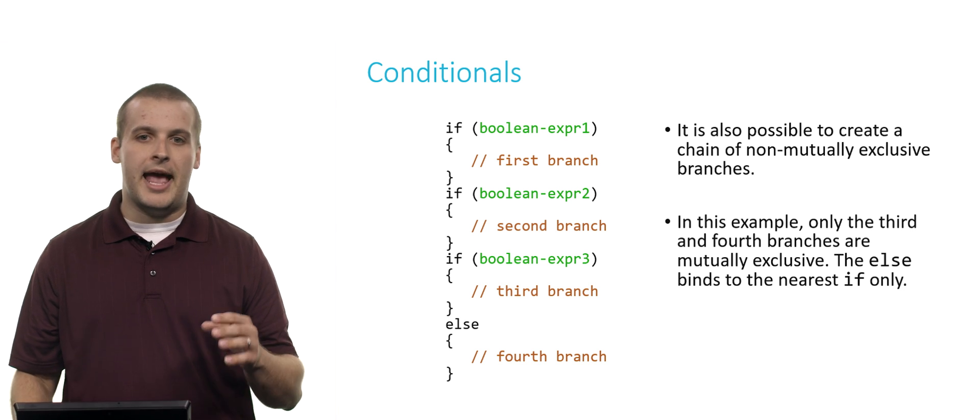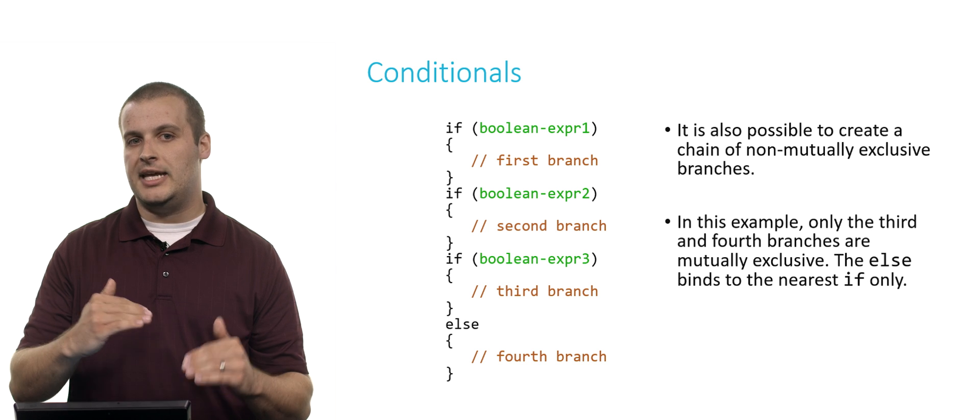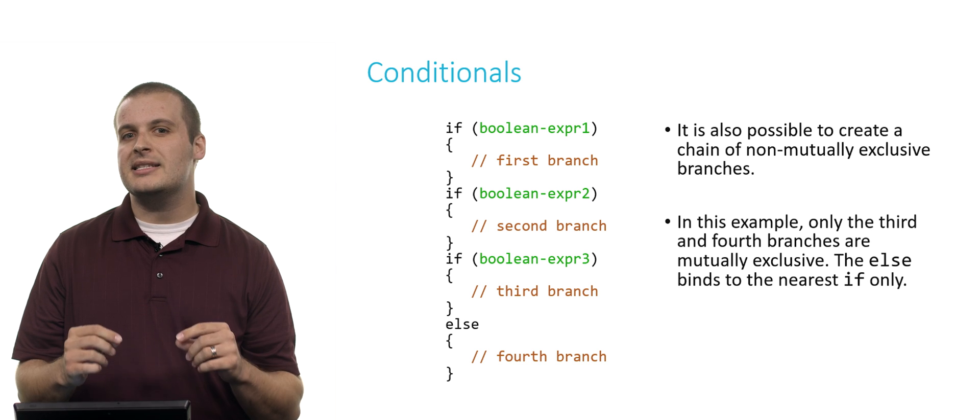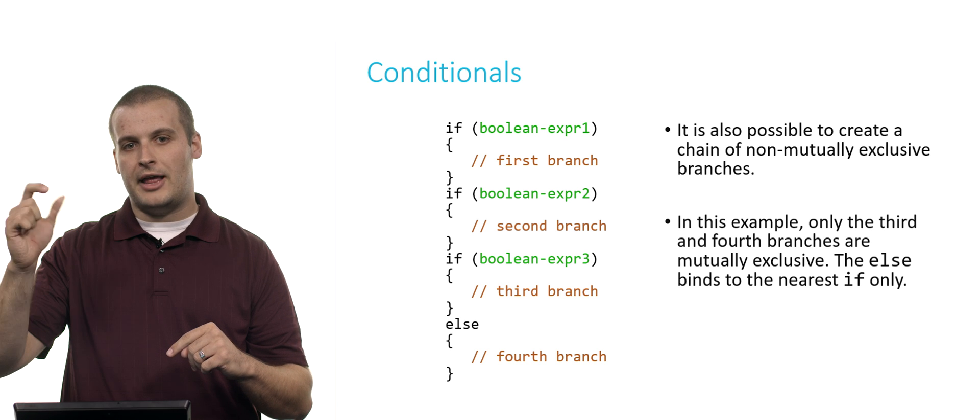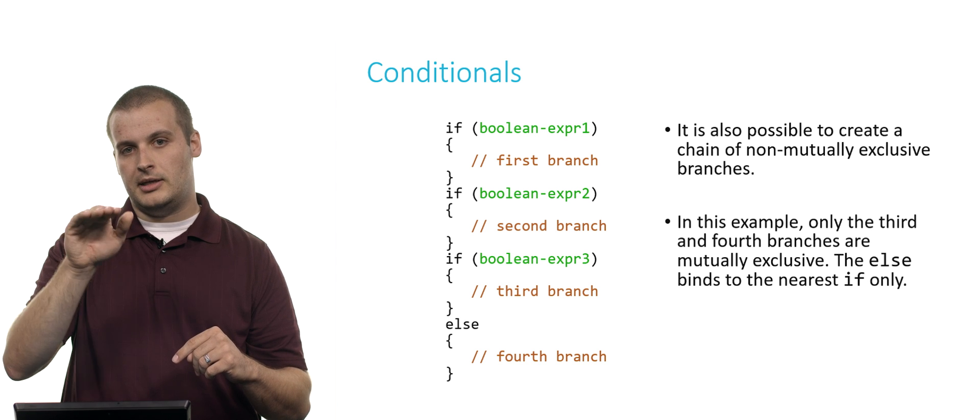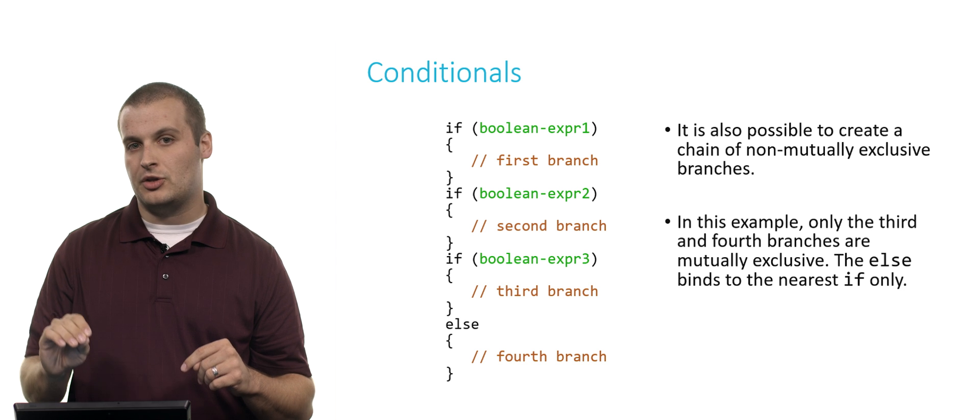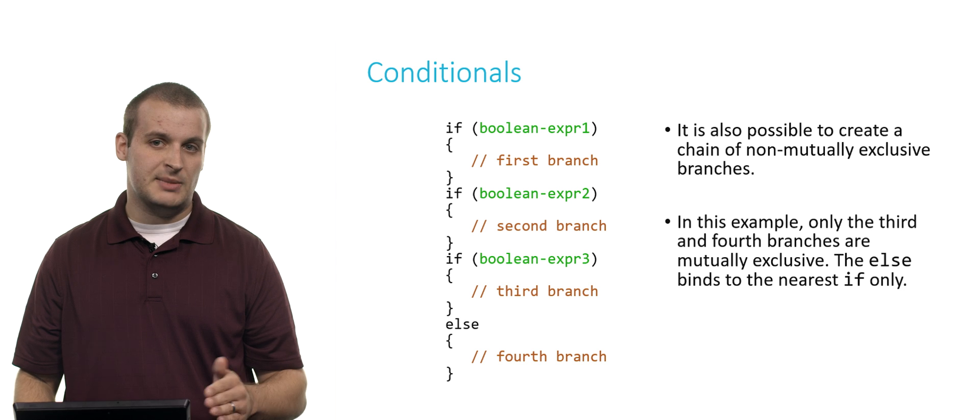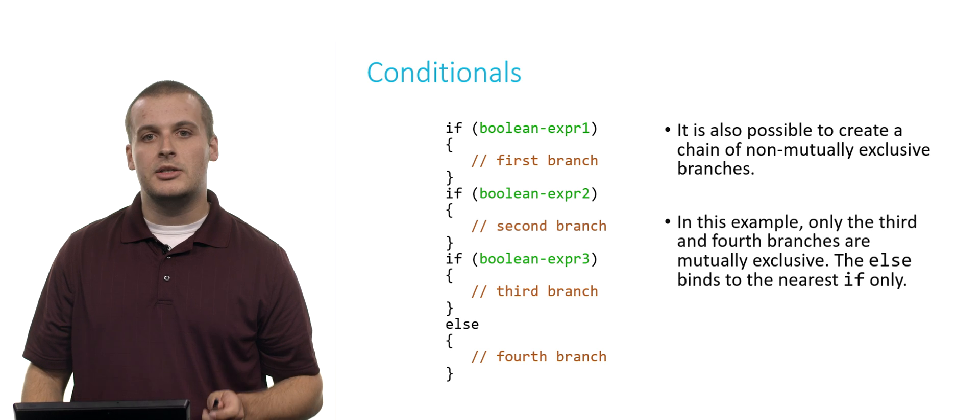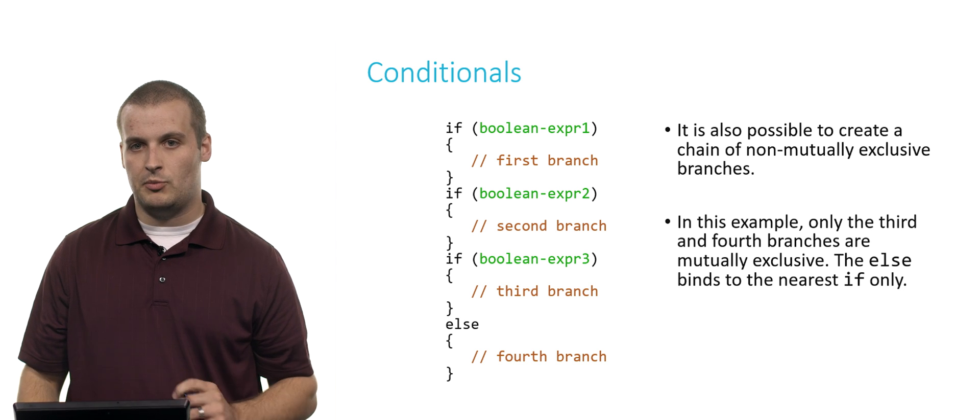The reason for this is that the else will only bind to the nearest if. So even though there's an else here, that doesn't necessarily create a mutually exclusive chain of everything, it's only that expression there with Boolean expression three that's mutually exclusive with the else. So it is possible, and sometimes quite useful, to create a chain of not mutually exclusive branches.